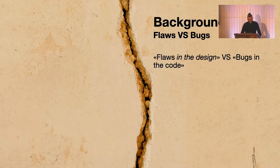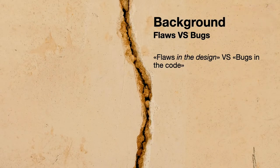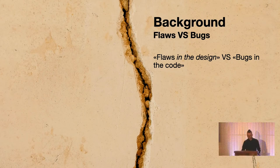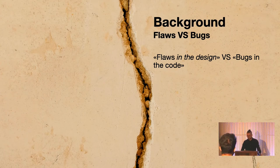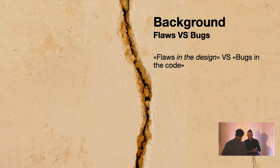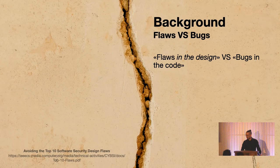A little bit of background. Some of you might be asking yourselves, what am I talking about when I'm saying privacy flaws? Well, this is one way I find useful to think about these things: flaws in the design or in the architecture level, as opposed to bugs in the code. Because faulty architectural assumptions can lead to cracks in the virtual foundations of our software, which will be much more difficult and time-consuming to refactor and rectify post-implementation — and also much more expensive if caught at a later stage.